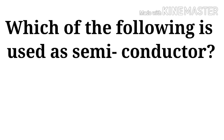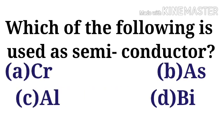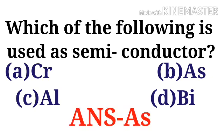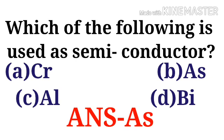Which of the following is used as a semiconductor? Options: option A Cr, option B As, option C Al, option D Bi. The correct option is option B: As (arsenic), which is a semiconductor.